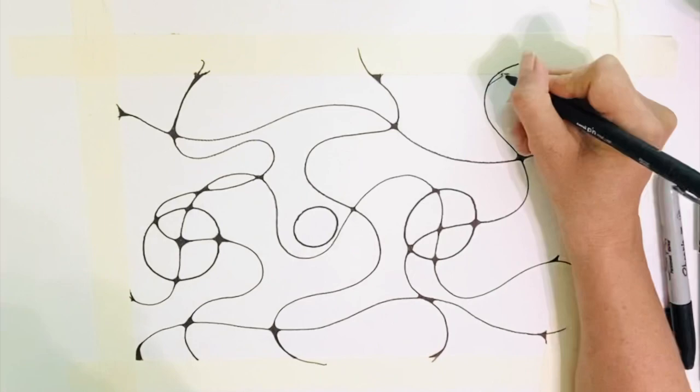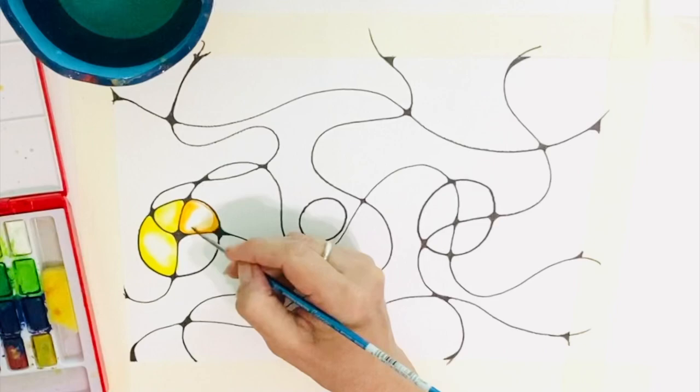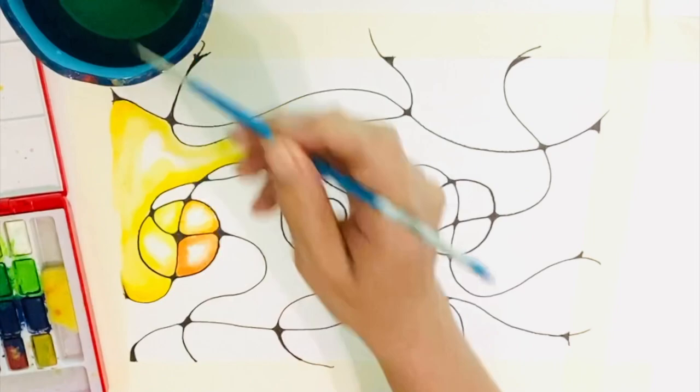When all your transitions are complete, it is time to colour. Using watercolours, I decided to work through the colour wheel here, starting with yellow and finishing with green.